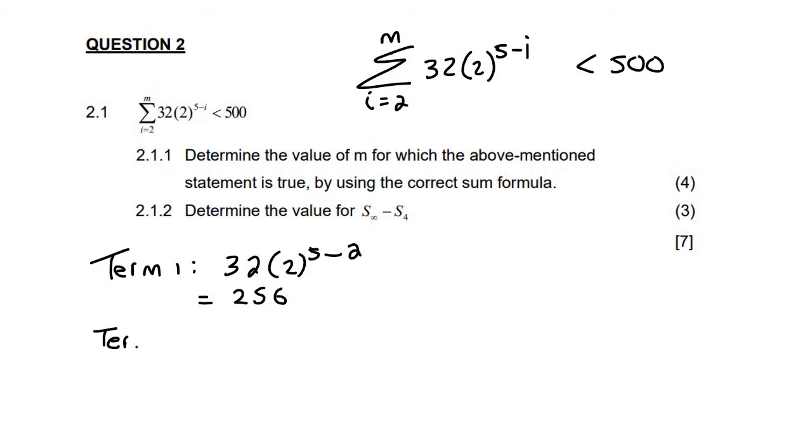Then we can find term two by doing 32 times 2 to the power of 5 minus 3, and that's going to give us 128. And then let's just find term three, so we can try to see what type of pattern is happening here. So that'll be 32(2)^(5-4), and that's going to give us 64.